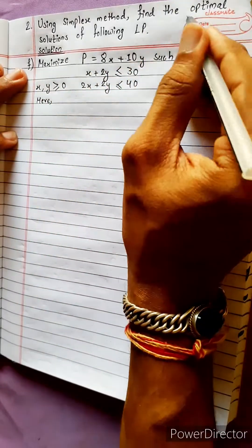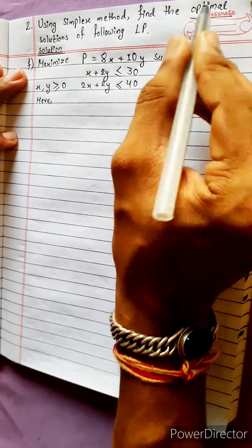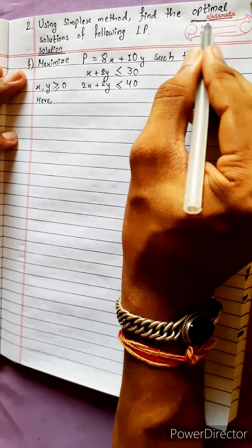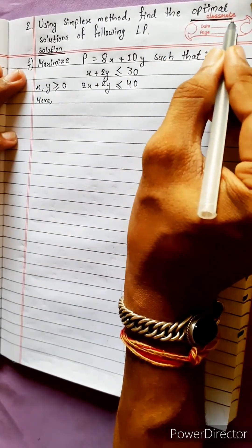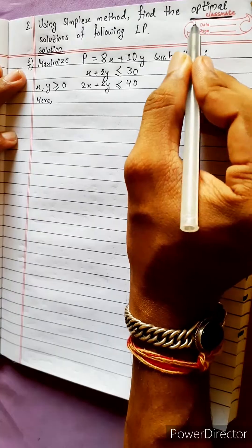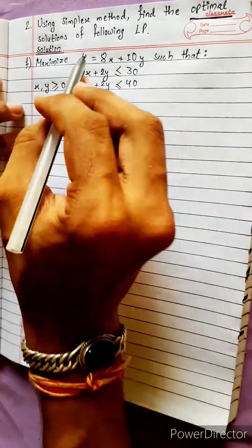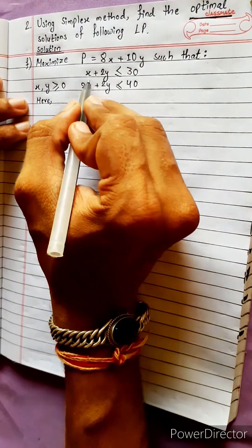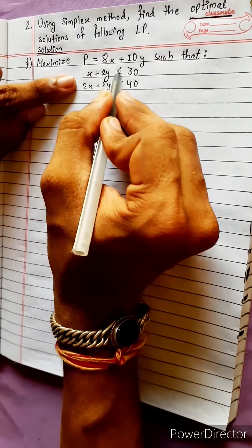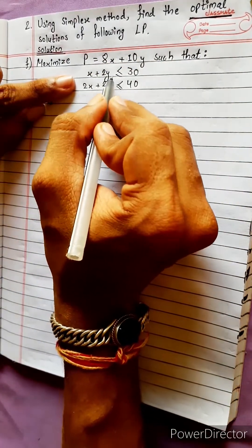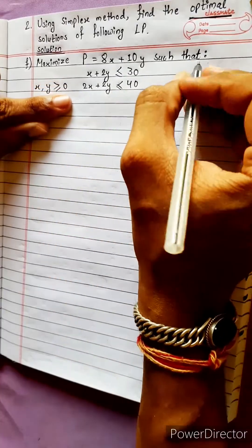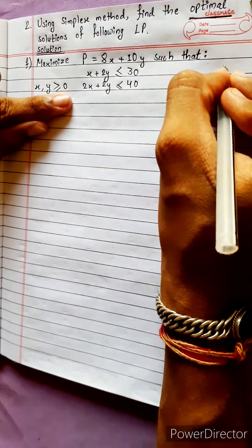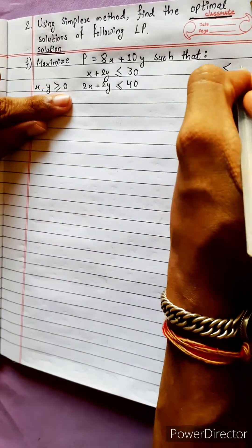Using the simplex method, find the optimal solution. The last row has a positive number. For the following linear problem, this inequality is less than or equal to, and this inequality is equal to.